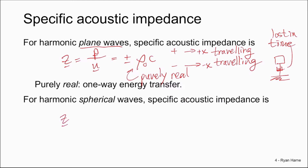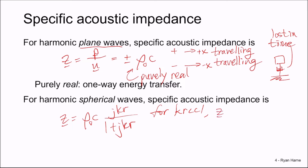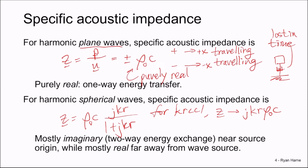For harmonic spherical waves, the specific acoustic impedance works out to ρ₀c times jkr divided by (1 + jkr). The product kr is important. For kr much less than 1 — very close to the acoustic source — the specific acoustic impedance is purely imaginary. But when we are very far from the source, for kr much greater than 1, z goes to ρ₀c, giving purely real specific acoustic impedance.